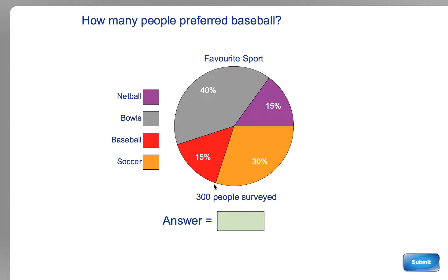One is to imagine that it was 100 people. So if it was 100 people, it would be 15. If it was 200 people, it would be 30. And if it was 300 people, which it was, it would be 45.